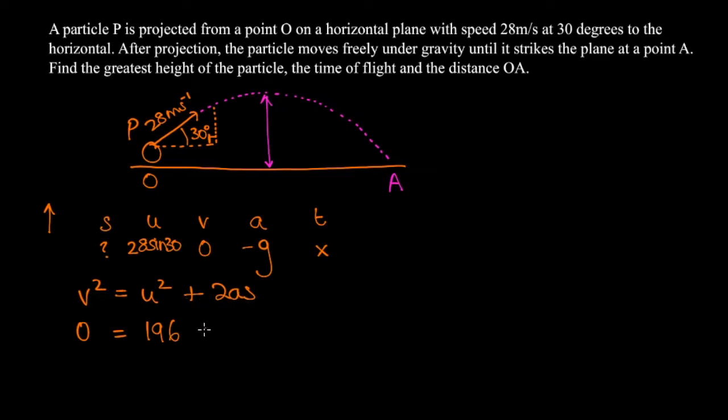And then 2as is going to be negative 2gs. So when we rearrange this for s, we get s equals 196 over 2g. And if we take g to be 9.8, then this comes out quite nicely as 10 meters. So the maximum height of the particle P is 10 meters.